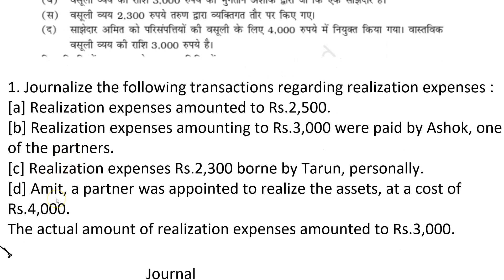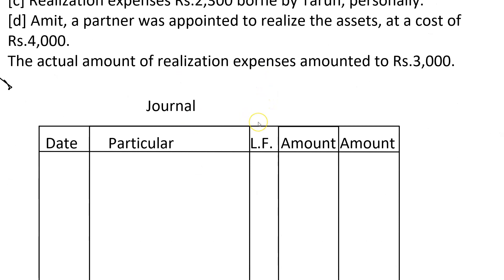Next, transaction D states: Amit, a partner, was appointed to realize the assets at a cost of Rs. 4000. Amit is a partner who has been appointed for the recovery of assets — 'parisampatti ki vasooli' — for Rs. 4000. The actual realization account amount is Rs. 3000. We have to make journal entries, so let's start with the first expense payment entry.